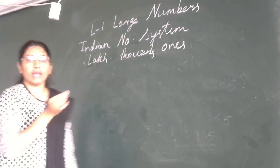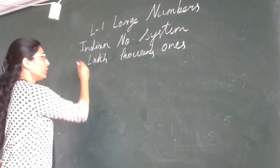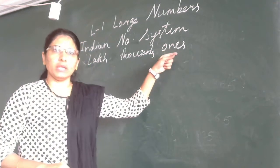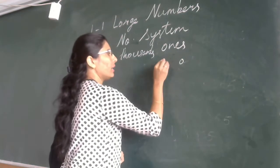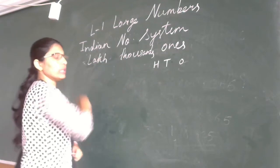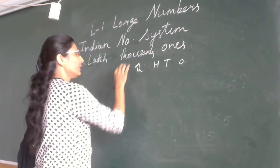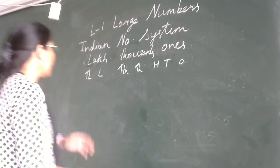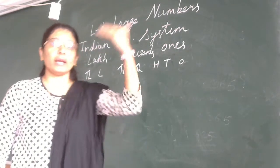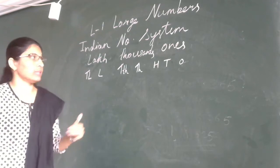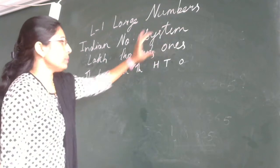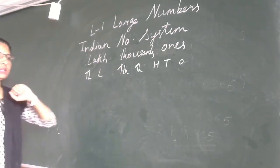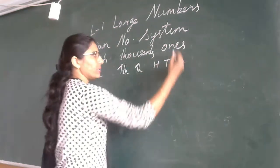We have the ones period, thousands period, and lakhs period. In the ones period there are three places: ones, tens, hundreds. In the thousands period there are two places: thousands and ten thousands. In the lakhs period there are two places: lakhs and ten lakhs. Similarly, we have crore and ten crore, and so on.